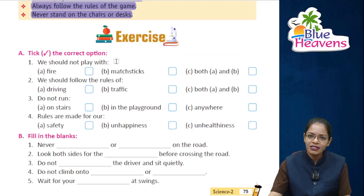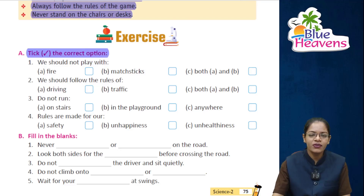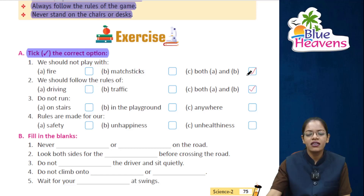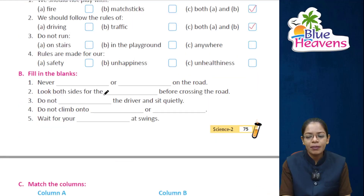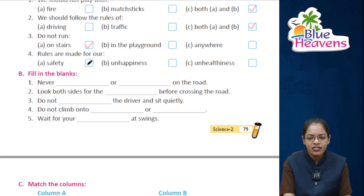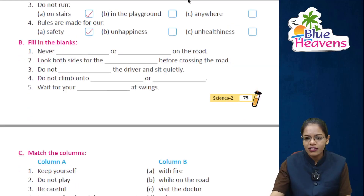Exercise A — tick the correct option. We should not play with fire or matchsticks — both A and B are correct. We should follow the rules of traffic and driving — both A and B are correct. Do not run on stairs — A is correct. Rules are made for our safety — A is correct.